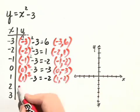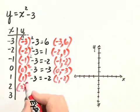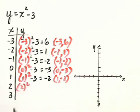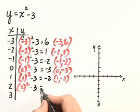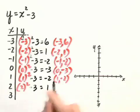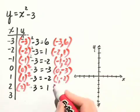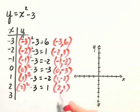Next, we substitute 2. We have 2 squared minus 3, which gives us 4 minus 3, or 1. So we have the point 2, comma 1.